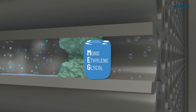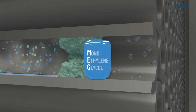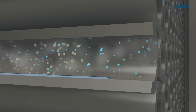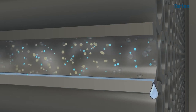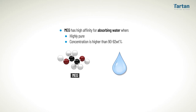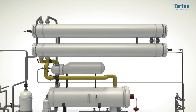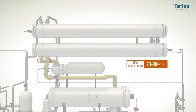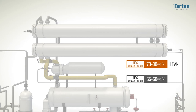That is why MEG, a chemical inhibitor, is injected into the exchanger and functions as an antifreeze. Although MEG has high affinity for absorbing water, it only does so when highly pure and its concentration is higher than 90-92 weight percent. While in a refrigeration unit, MEG's concentration is typically between 70-80 weight percent in the lean solution and between 55-60 weight percent in the rich, so the water is not absorbed.